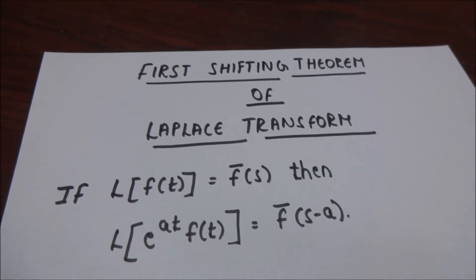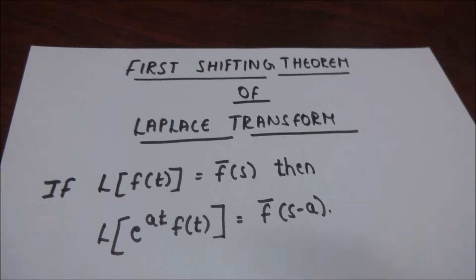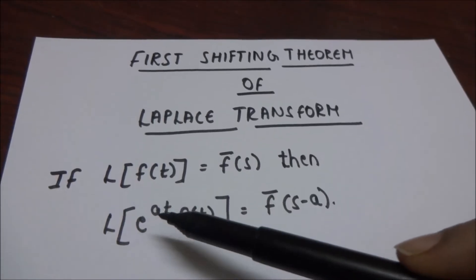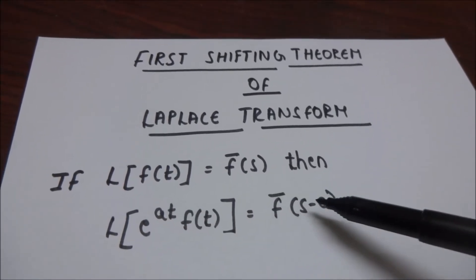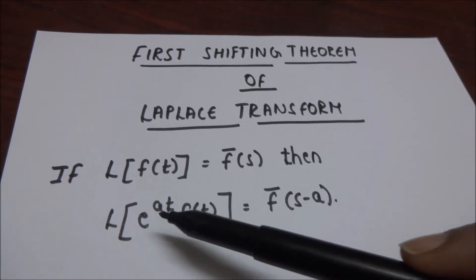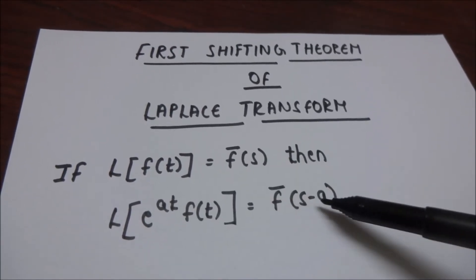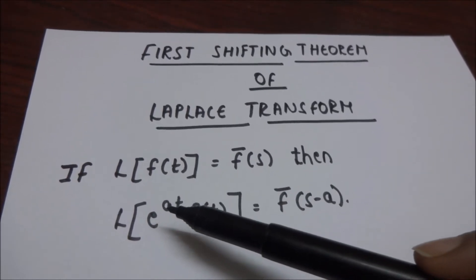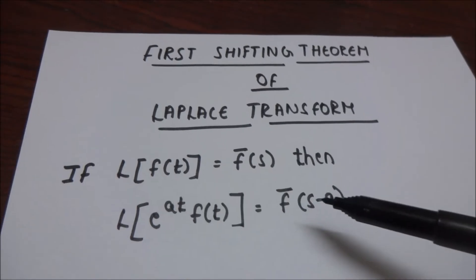The formula for the first shifting theorem of Laplace transform is: if Laplace of f(t) is equal to f̄(s), then Laplace of e^(at) into f(t) is equal to f̄(s minus a). So if you multiply the function e^(at), then f(s) becomes f(s minus a). Note: if the exponent is plus a, then we substitute s minus a; if the exponent is minus a, then we substitute s plus a.